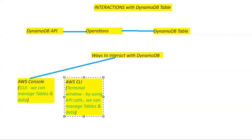We can also interact with DynamoDB using the AWS CLI — a command line interface — which allows you to script API calls from your terminal. From your terminal window, using API calls, you can manage your tables and the data inside your tables.